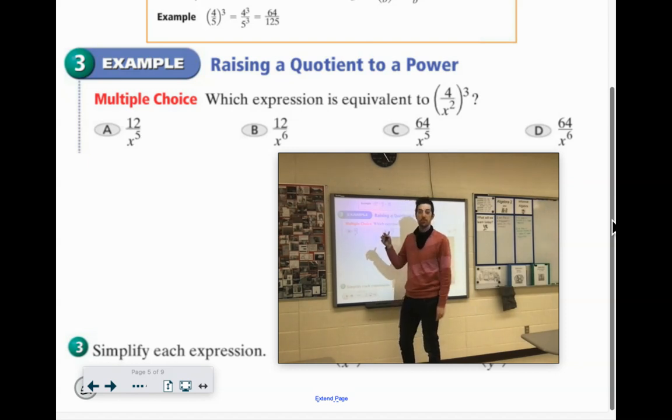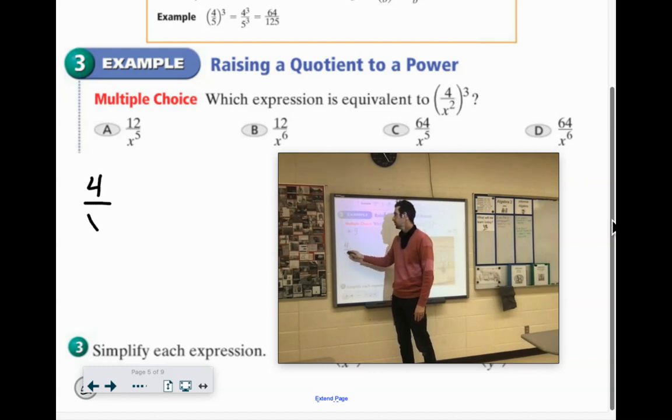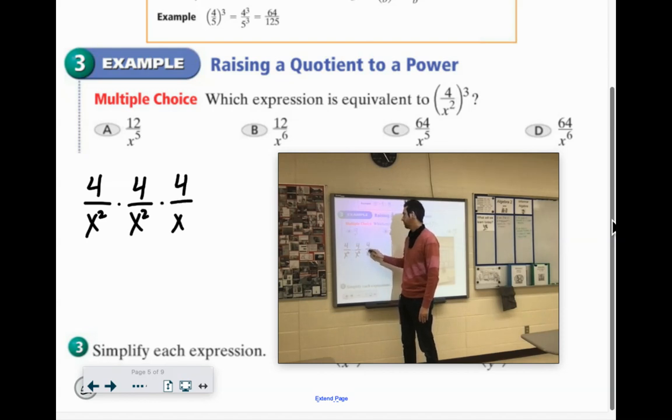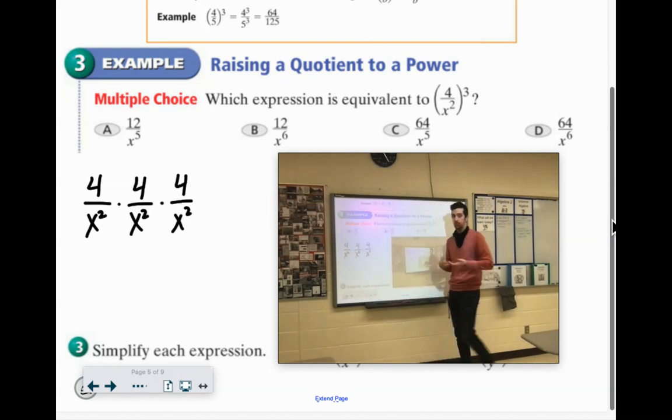Now, if you have something to the third power, it means times itself three times. So it's like we're doing 4 over x squared times 4 over x squared times 4 over x squared, right? That's 4 over x squared to the third power.